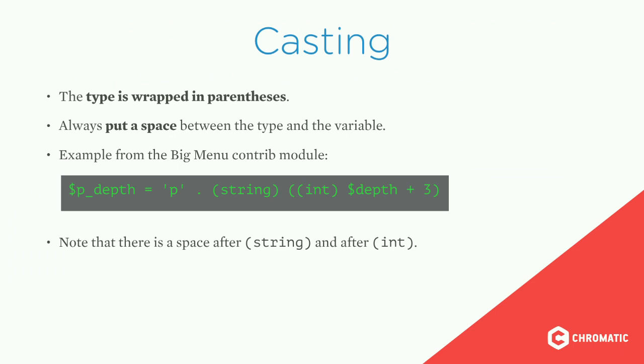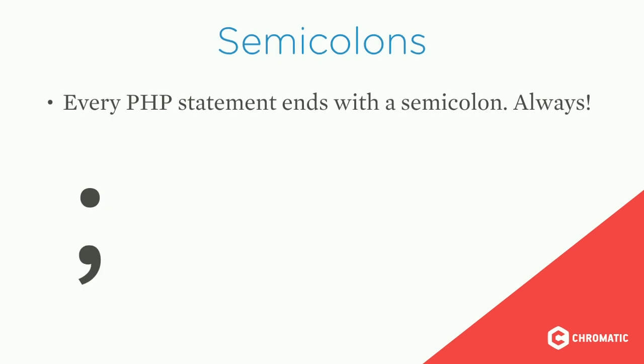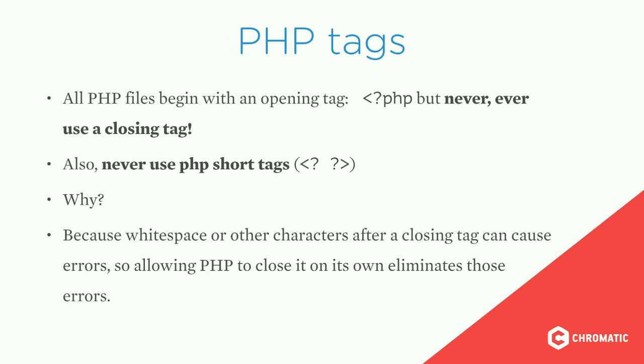Casting: the type is always wrapped in parentheses and you always put a space between the type and the variable. In an example from the Big Menu contrib module, a variable is cast twice — to an int and then to a string — with a space after each type. Every PHP statement ends with a semicolon, always. All PHP files begin with an opening tag but never use a closing tag, and never use PHP short tags in Drupal, because whitespace after a closing tag can cause errors.